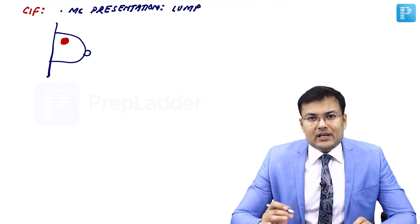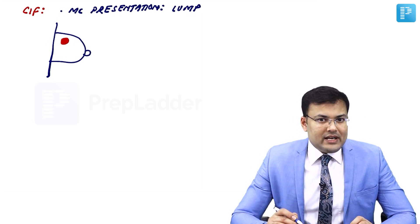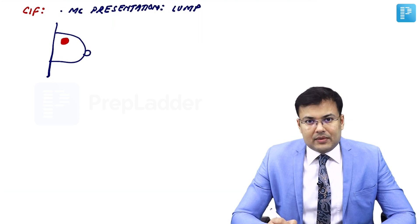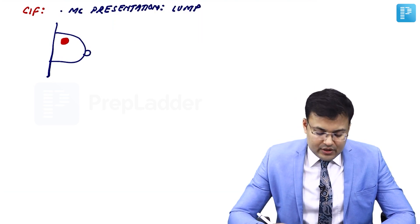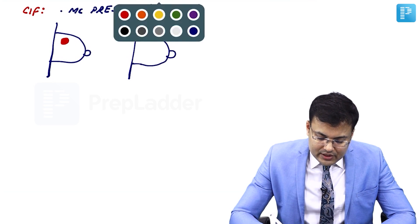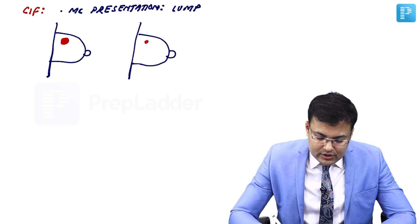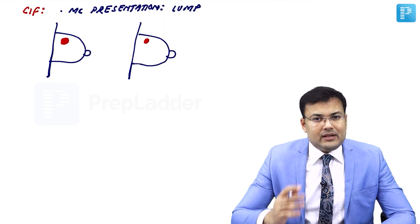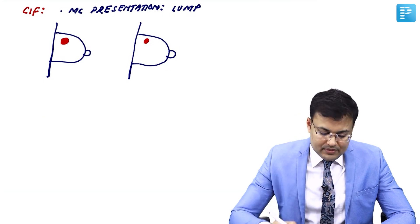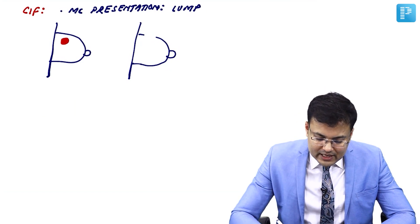Now suppose the female is from a rural area and she is ignorant. She noticed the lump but she is just ignoring it. This is the breast. She noticed the lump, and slowly what will happen? There is enlargement of the lump — enlargement of the size of the lump.